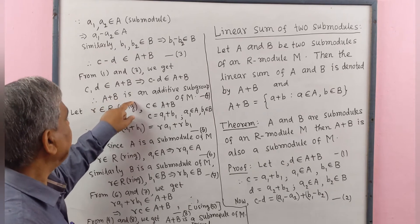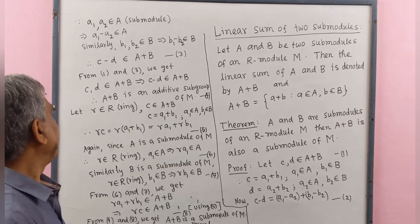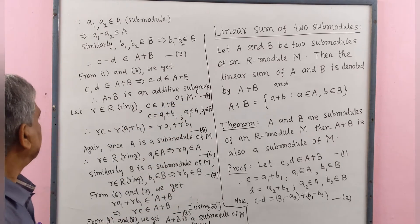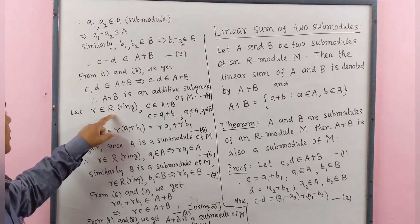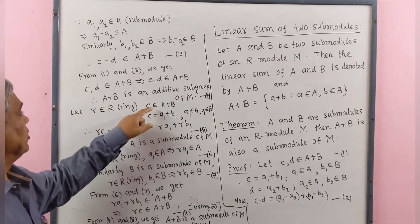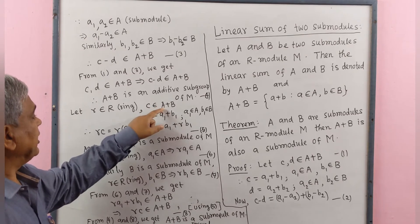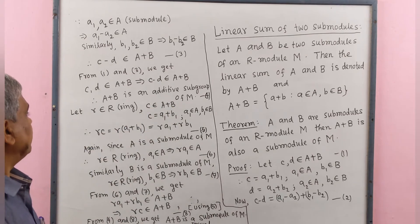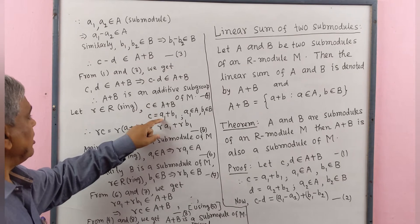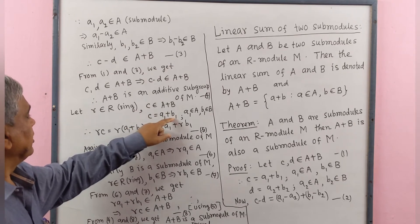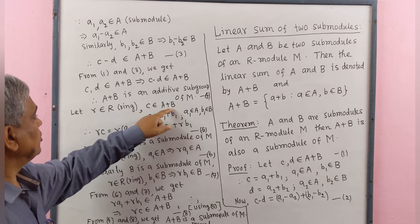Therefore, A plus B is an additive subgroup of M. Now let small r belong to capital R, the ring, and small c belong to capital A plus capital B. Therefore we may write c as the sum of two elements a1 and b1, where a1 belongs to capital A and b1 belongs to capital B.